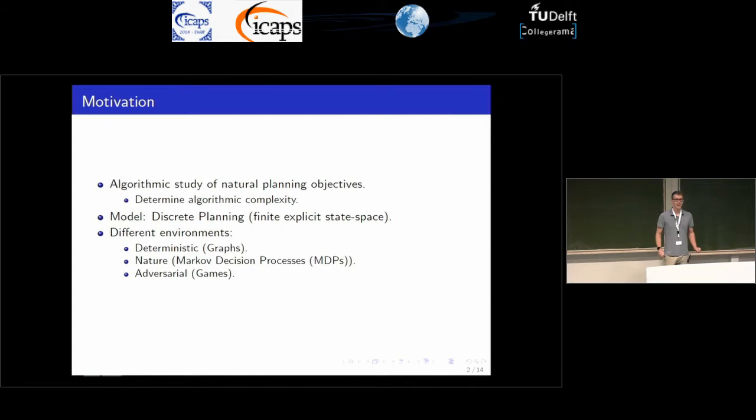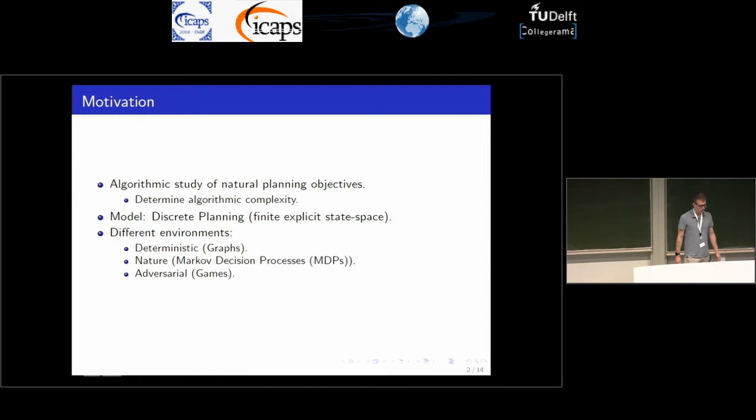Our model was the discrete model. When you have a finite explicit state space, a state is a vertex in a graph. When you go from one state to the next, you take a transition — you take an edge.